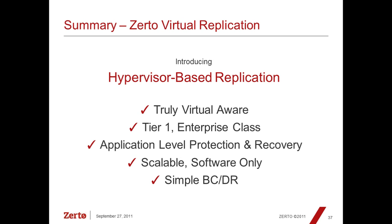Does Zerto have built-in WAN optimization? Yes. For a lot of our customers, wide-area networks are very different from local area networks — they fail, are limited in bandwidth, have high packet loss and high latencies. To work well with them, you must have optimizations. It starts from basic compression, then throttling with different throttling priorities, and all of these WAN optimizations allow you to push more data over the line than you would naturally. There is a lot of WAN optimization built into the product.